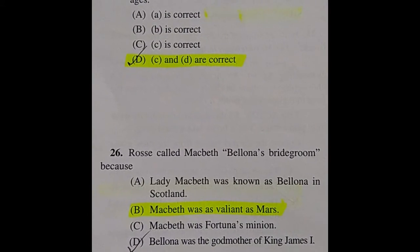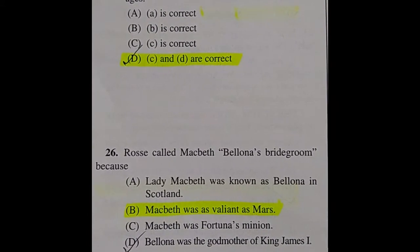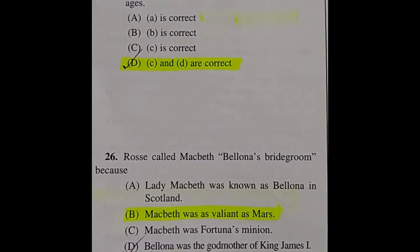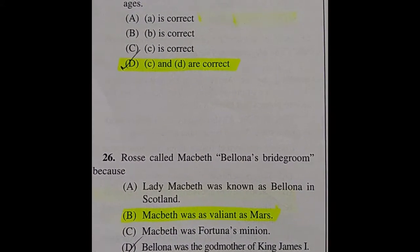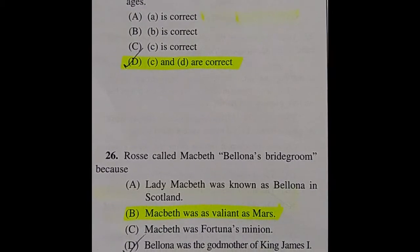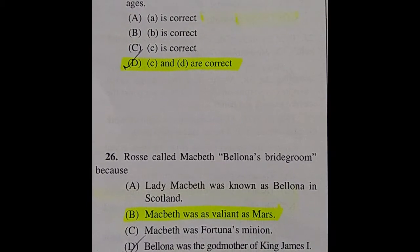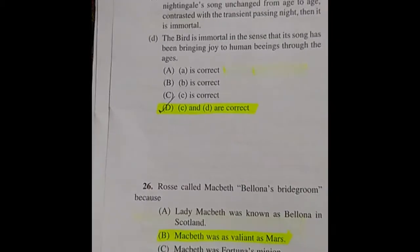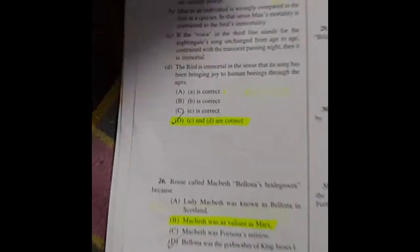Question 26: Ross called Macbeth 'Bellona's bridegroom' because — the right answer is option B: Macbeth was as valiant as Mars.